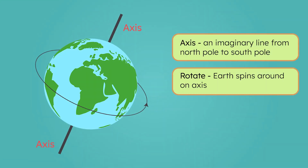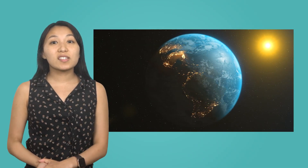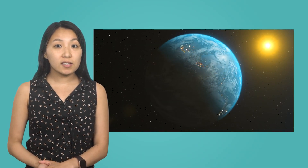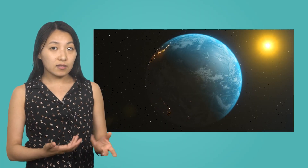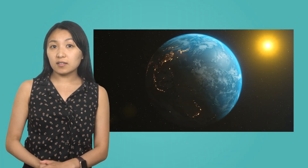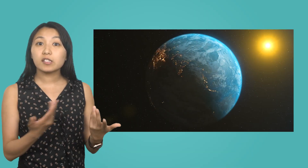Our Earth rotates on its axis, an imaginary line that runs from the North Pole to the South Pole. Rotation means the Earth spins around this axis, much like a spinning top or a basketball spinning on a finger. This rotation causes different parts of Earth to face the sun at different times, resulting in day and night. The side facing the sun experiences daytime, while the side facing away experiences nighttime.